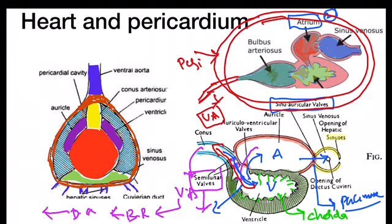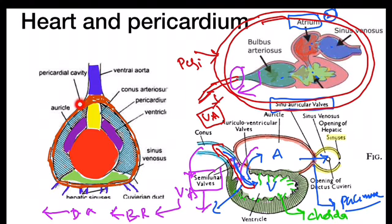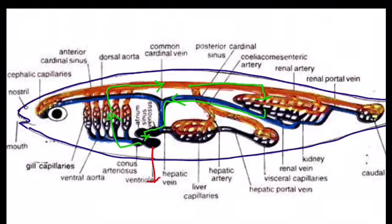Blood from the bulbous arteriosus flows into the ventral aorta. There is no valve between the bulbous arteriosus and the ventral aorta — that we must remember. Valves are present only between the sinus venosus and atrium, between the atrium and ventricle, and between the ventricle and the bulbous arteriosus or conus arteriosus. All four chambers are covered by the pericardium. This heart is present beneath the pharynx region; it collects blood from all body organs by the venous system and pumps blood to all body organs by the arterial system.